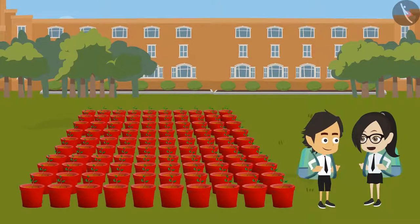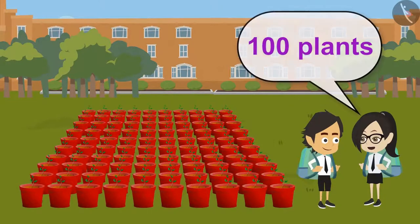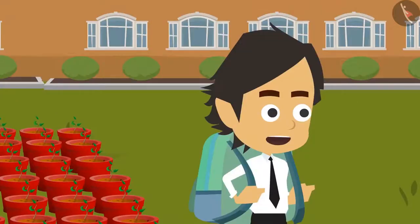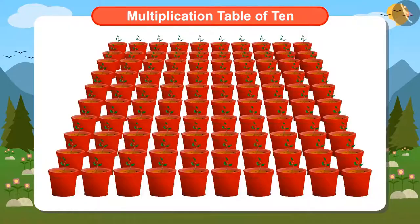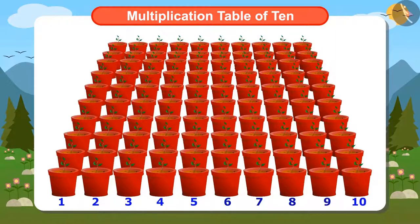Not so many, Ayushman. They are in total 100 plants. How did you count so fast, Vandana? It's very easy. Tell me, how many plants are there in a row? 10.